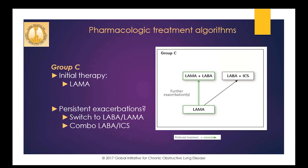Patients in group C or D have more frequent exacerbations and worse symptom scores, leading to poor overall quality of life. For group C patients, guidelines recommend starting with a single long-acting bronchodilator and specifically recommend LAMAs — tiotropium, aclidinium, umeclidinium, or glycopyrrolate. LAMAs are recommended because in two large head-to-head comparisons, the tested LAMA was better than the LABA at preventing exacerbations.